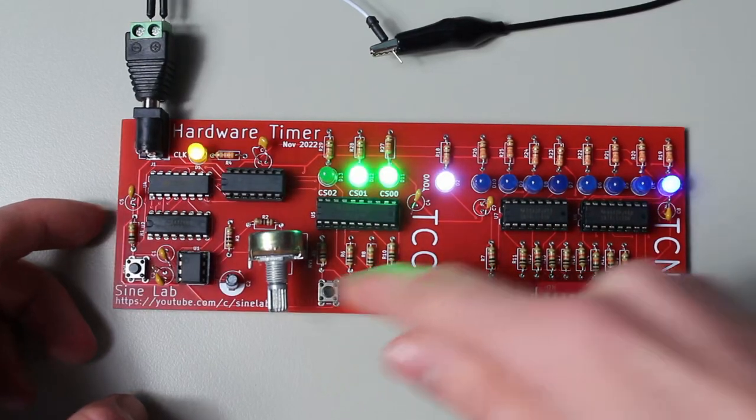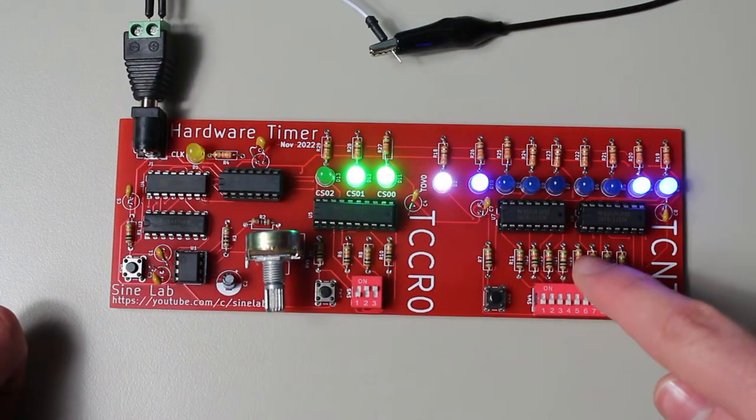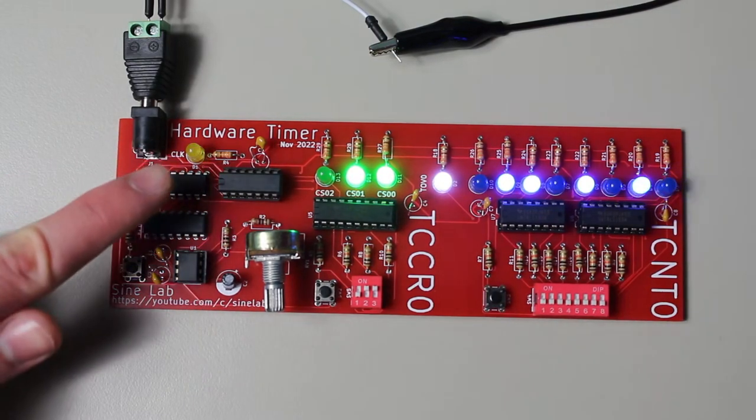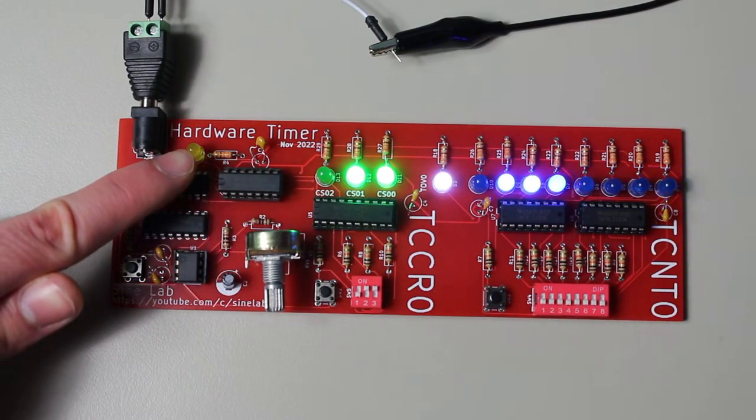Anyways, we have the control register here, the counter here, some additional control circuitry here, a comparator here, and finally the clock input here.